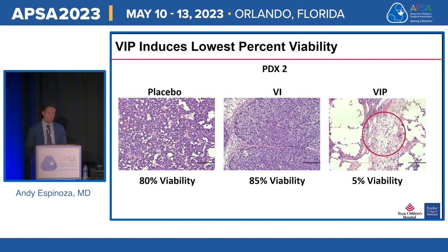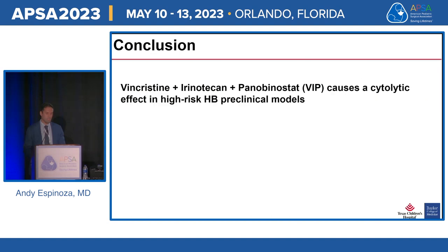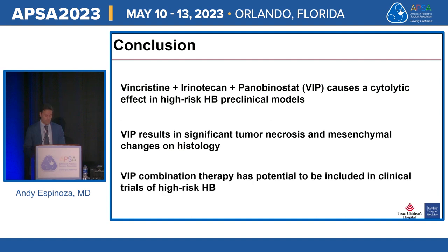The second PDX model showed similar results with statistically lower cell viability and similar mesenchymal changes. In conclusion, the VIP combination of vincristine, irinotecan, and panobinostat resulted in cytolytic effects in preclinical models. To our knowledge, this is the first study showing effective cytolytic effect in hepatoblastoma PDX models, with high levels of necrosis and mesenchymal changes at the microscopic level. After validating in more chemo-resistant PDX models, this therapy has potential for clinical trials in high-risk hepatoblastoma.